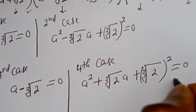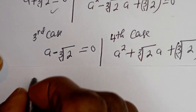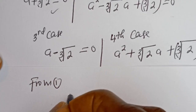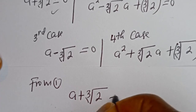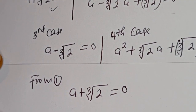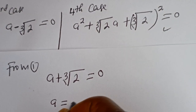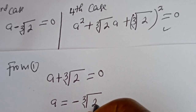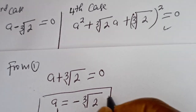Let's consider the first case. We have a plus cube root of two equals zero, so a equals minus cube root of two. Let's call this a₁. This is the first real value of a.